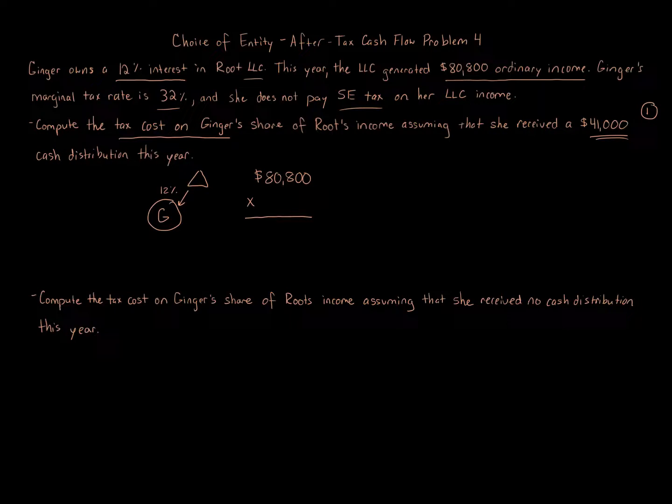For Ginger, we take 12% of that. So $80,800 times 12% is going to be Ginger's share, which is $9,696.